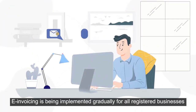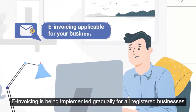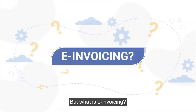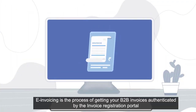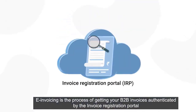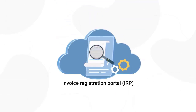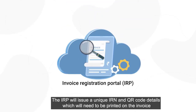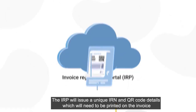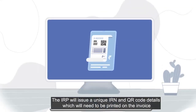E-invoicing is being implemented gradually for all registered businesses. E-invoicing is the process of getting your B2B invoices authenticated by the invoice registration portal. The IRP will issue a unique IRN and QR code details which will need to be printed on the invoice.